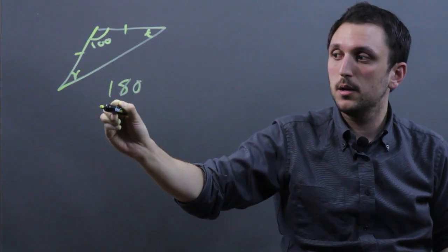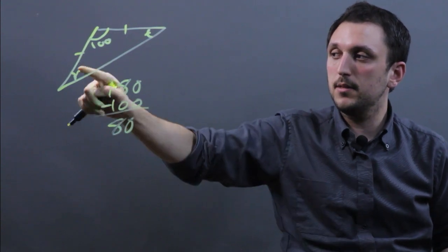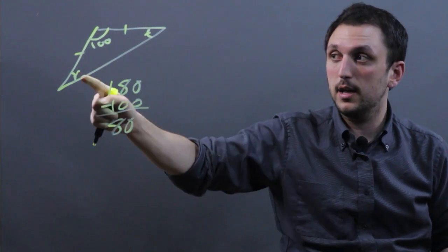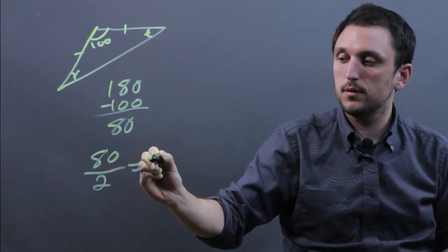So it's 180 minus 100, which is 80, and that means that this plus this equals 80, and they're equal, so then we say 80 divided by 2 equals 40.